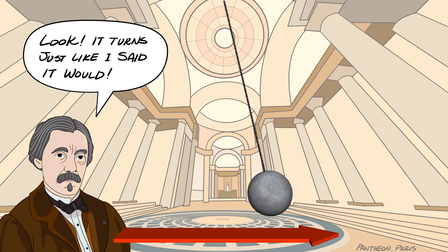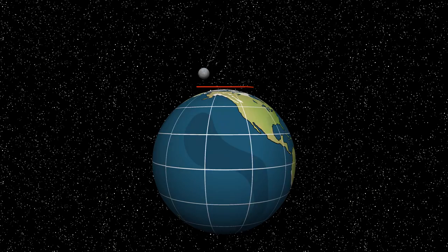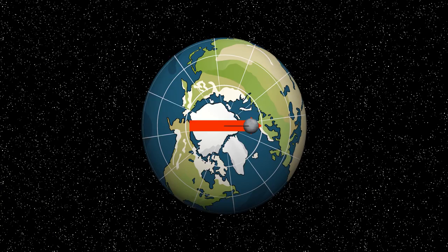Let's place the pendulum on top of the North Pole. Now imagine the ball bobbing back and forth while Earth beneath it spins counterclockwise. From this perspective, the pendulum is fixed while Earth rotates beneath it.